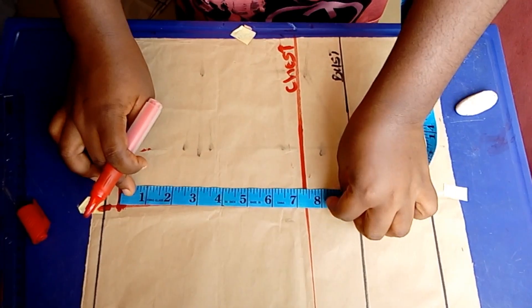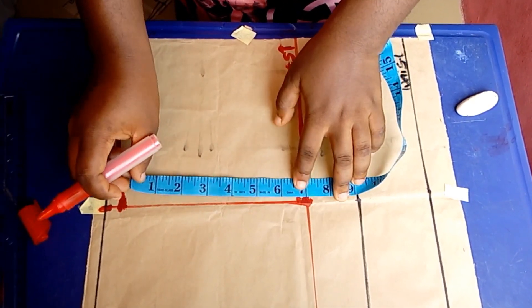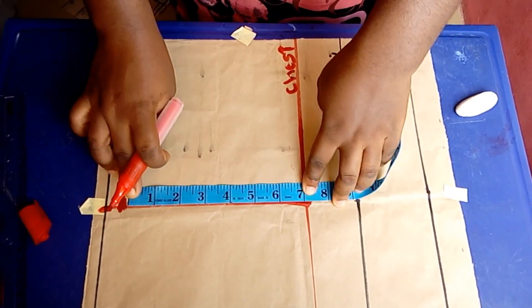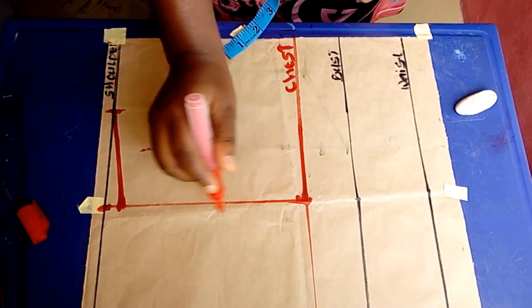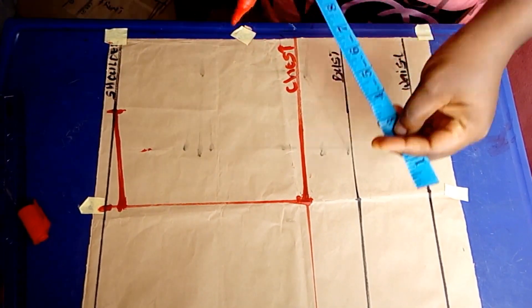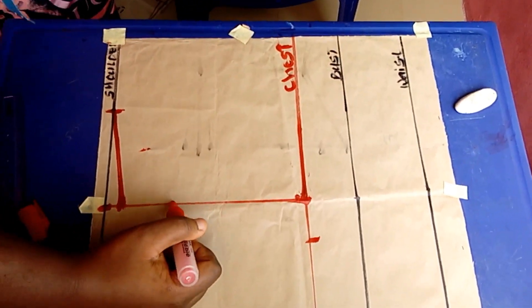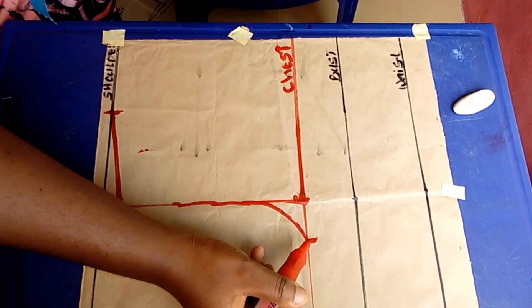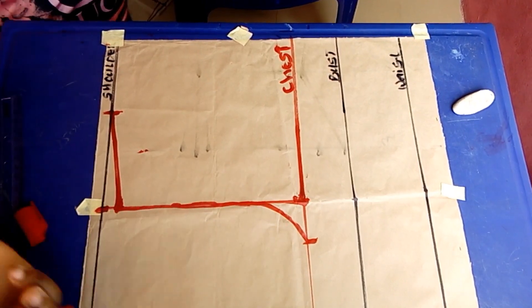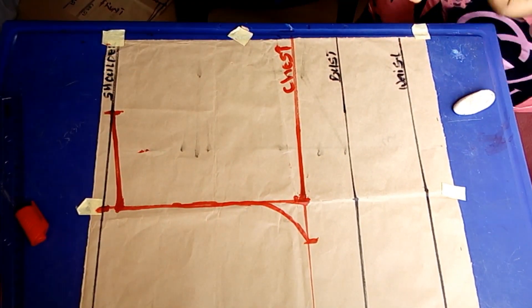Now for the back we are not going to be dividing our armhole into two and getting the midpoint the way we did for the front. We will not be doing that. We'll just measure our round bust divided by four and then we're just going to curve it to meet it at that point, as you can see me doing right now.